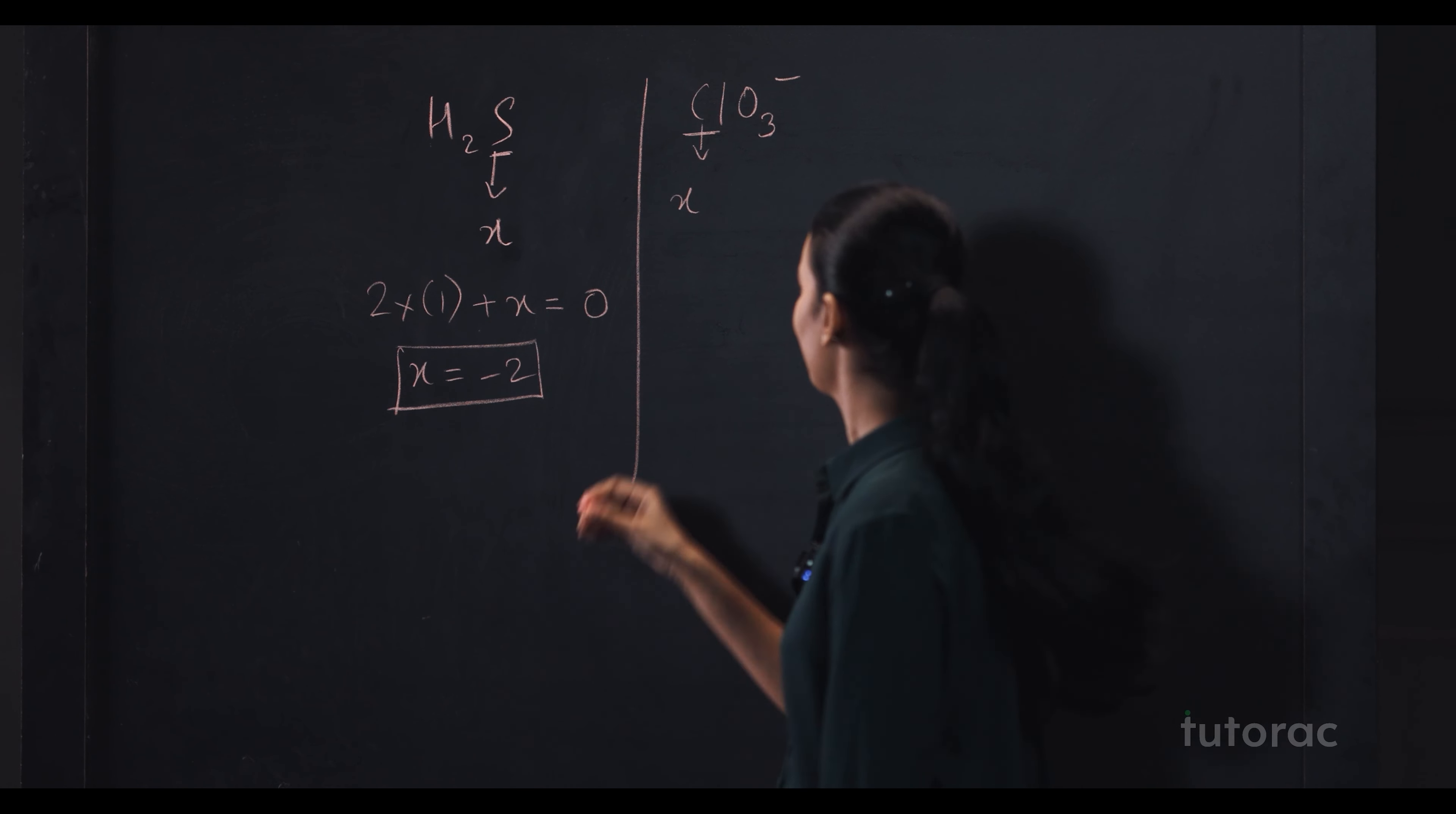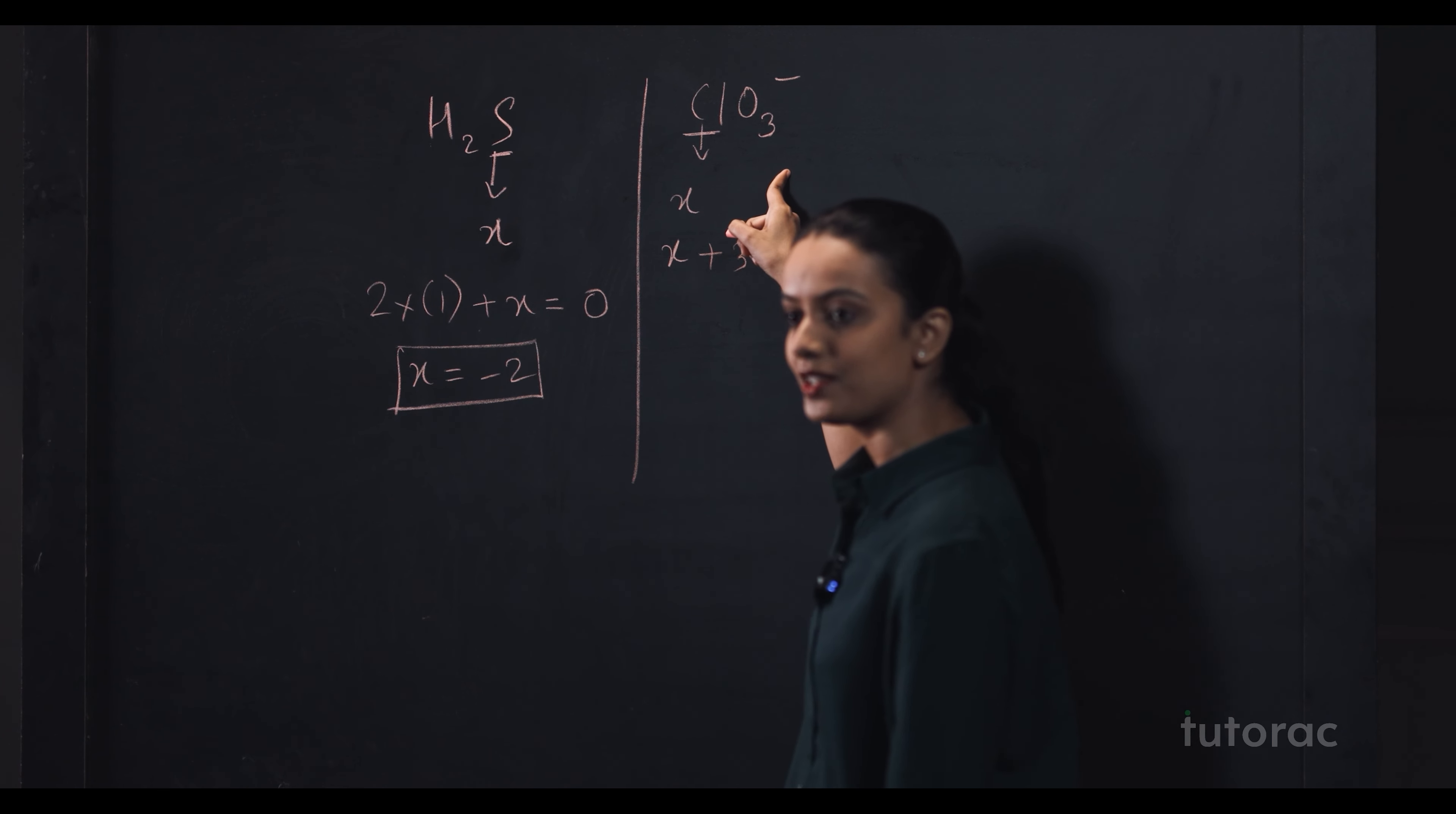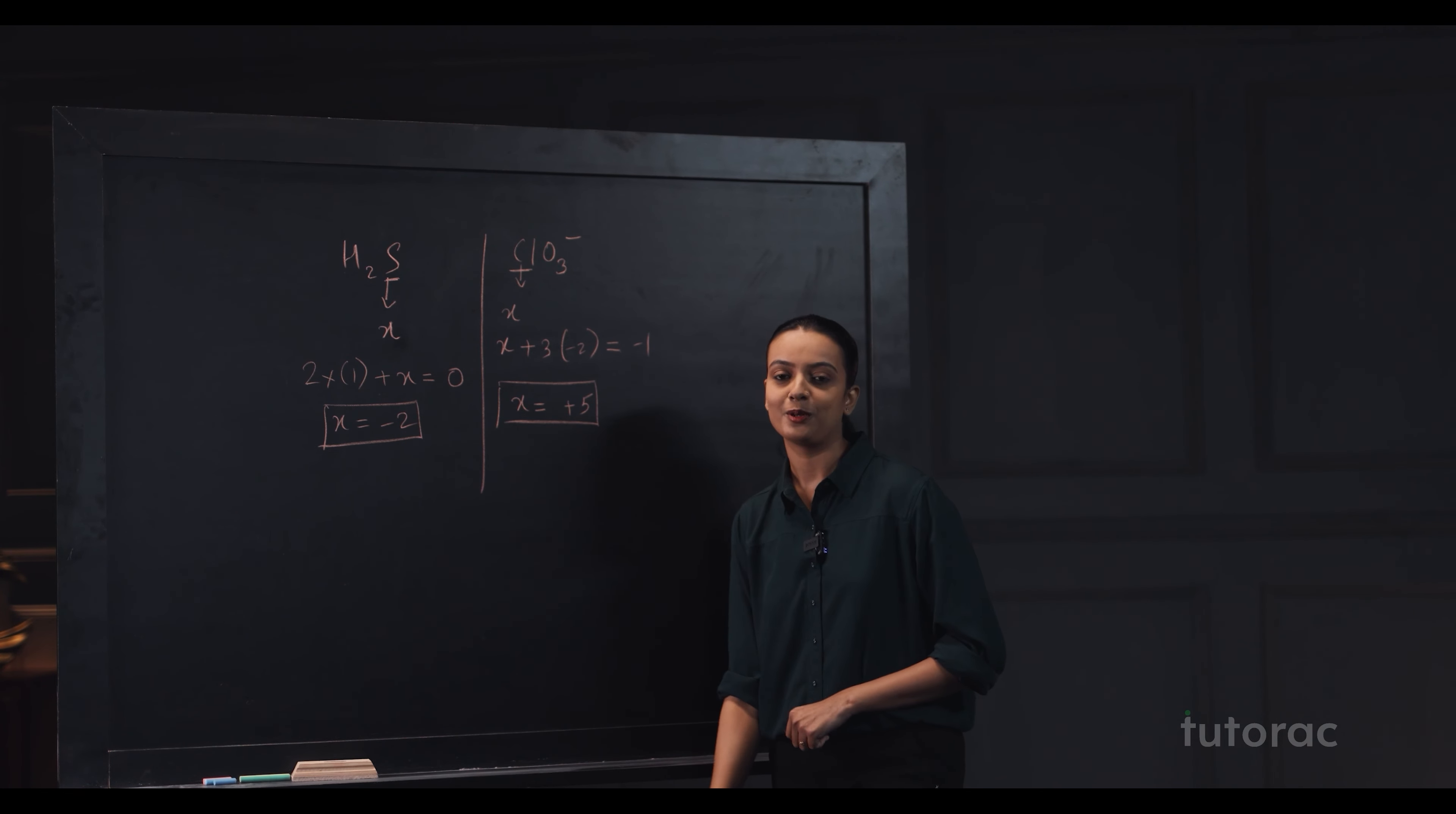Now, tell me what is the oxidation number of oxygen here? Yes, it is minus 2. So, let's see, X plus 3 oxygens are here. So, 3 into minus 2 and now I will equate it to minus 1. Yes.